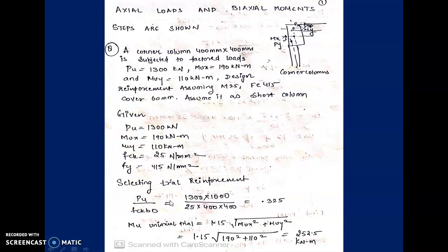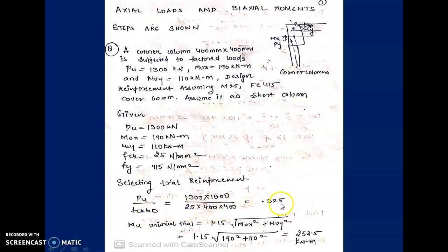First, we fix a trial reinforcement using SP16 charts. We find Pu/(fck·B·D) = 1300×1000 / (25×400×400) = 0.325.